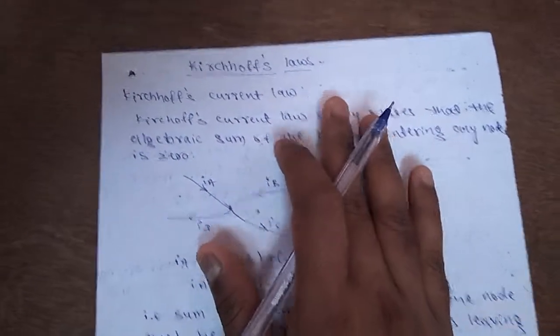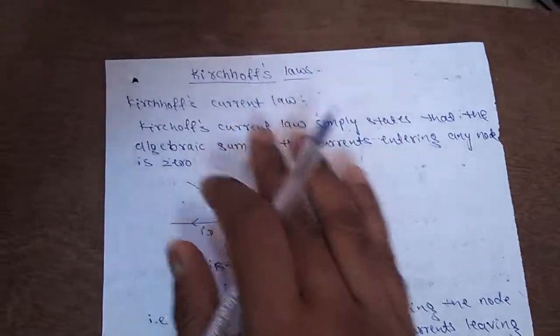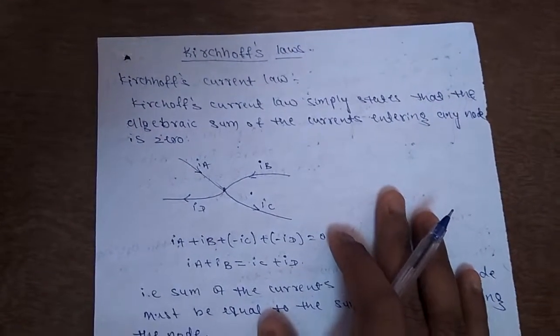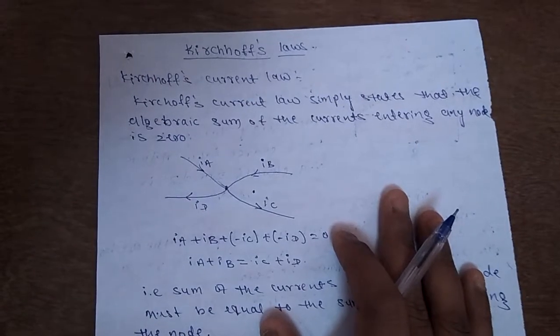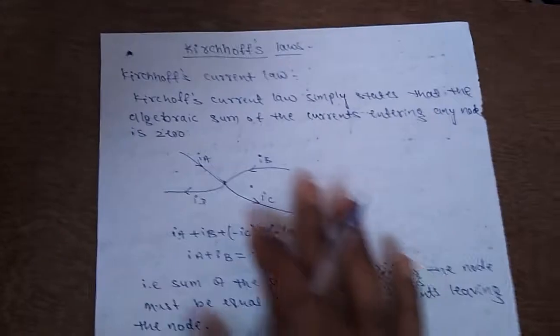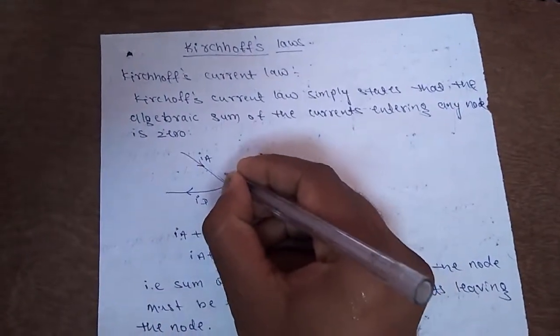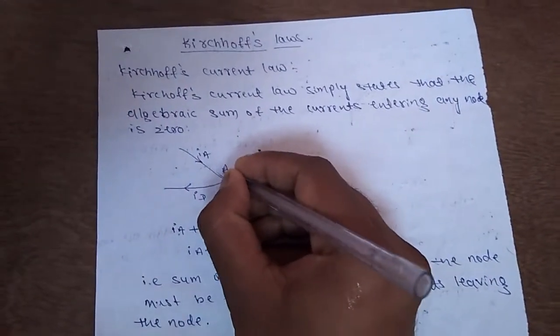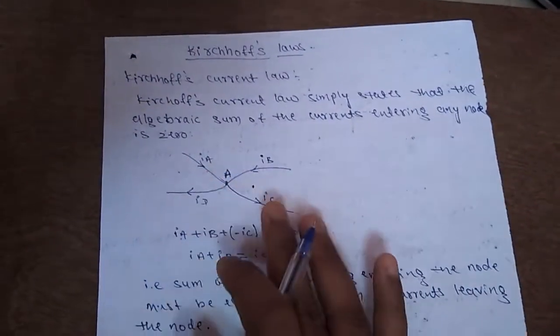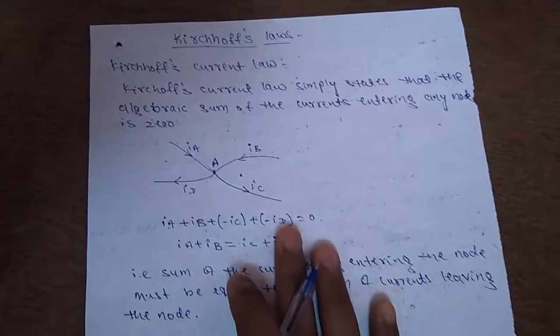One is called Kirchhoff's current law. What Kirchhoff's current law states is, Kirchhoff's current law simply states that the algebraic sum of currents entering any node is zero. That is, if you consider this diagram, and I am going to mark this node as A, and there are four currents which are either entering or leaving the node.